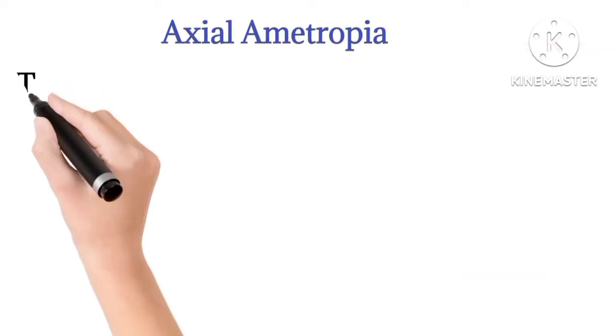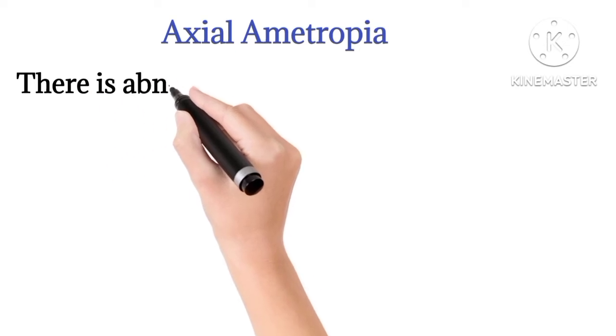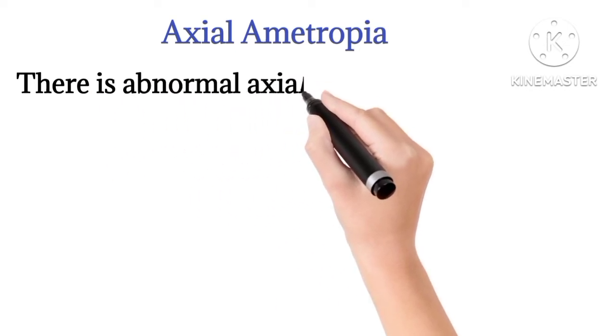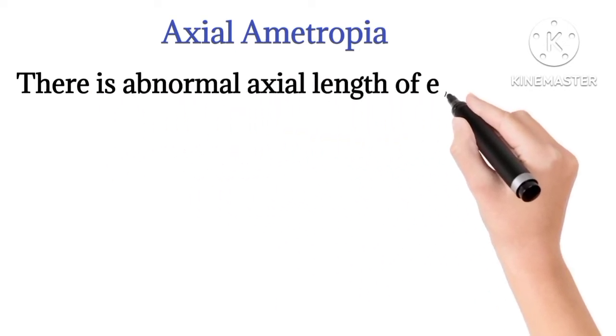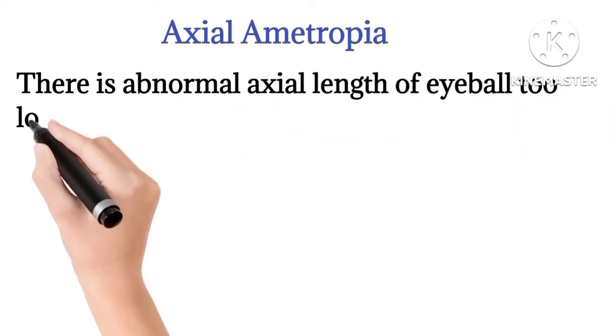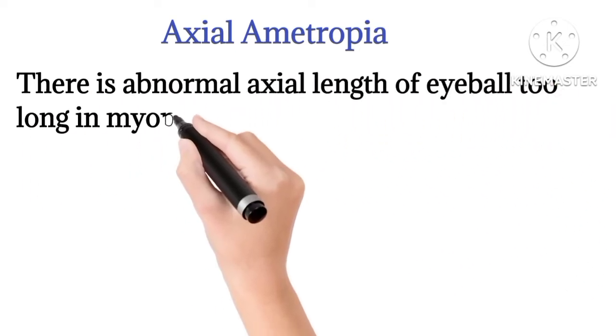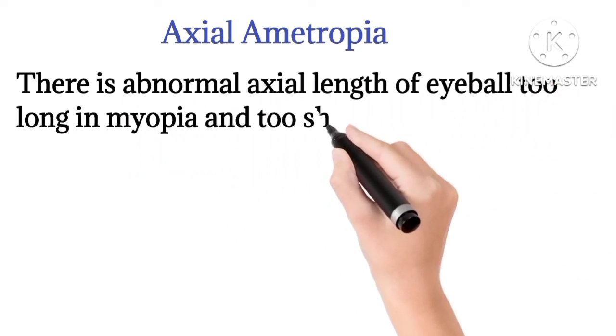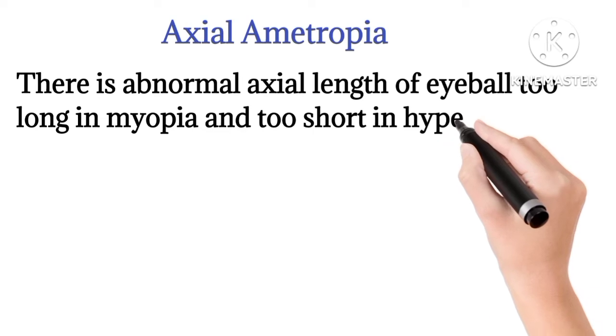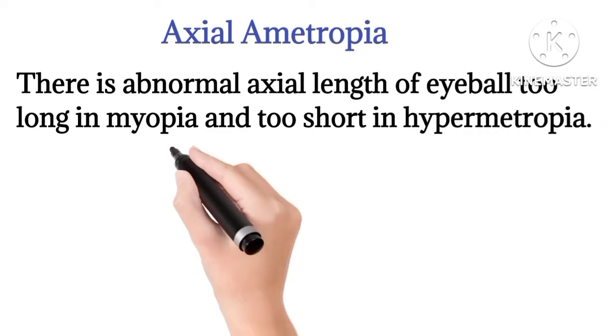The first one is axial ametropia. There is an abnormal axial length of the eyeball — too long in myopia and too short in hypermetropia.